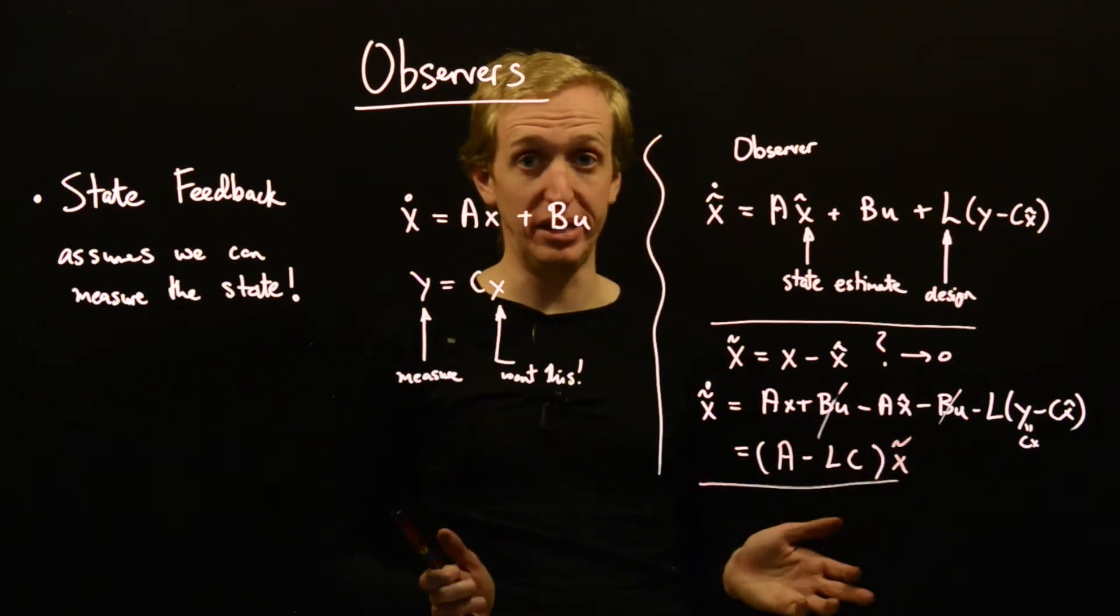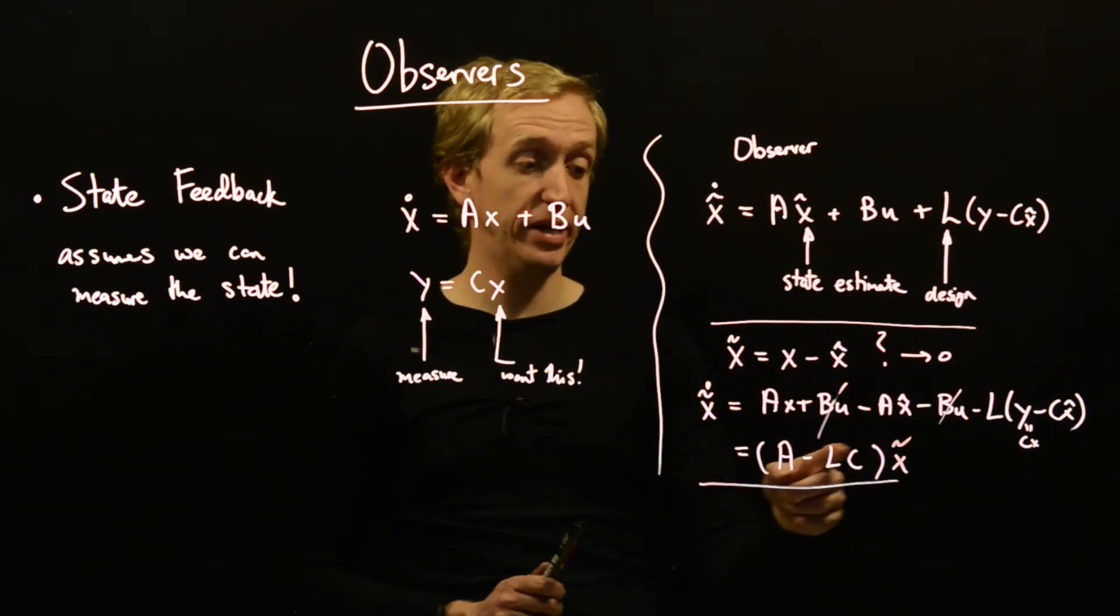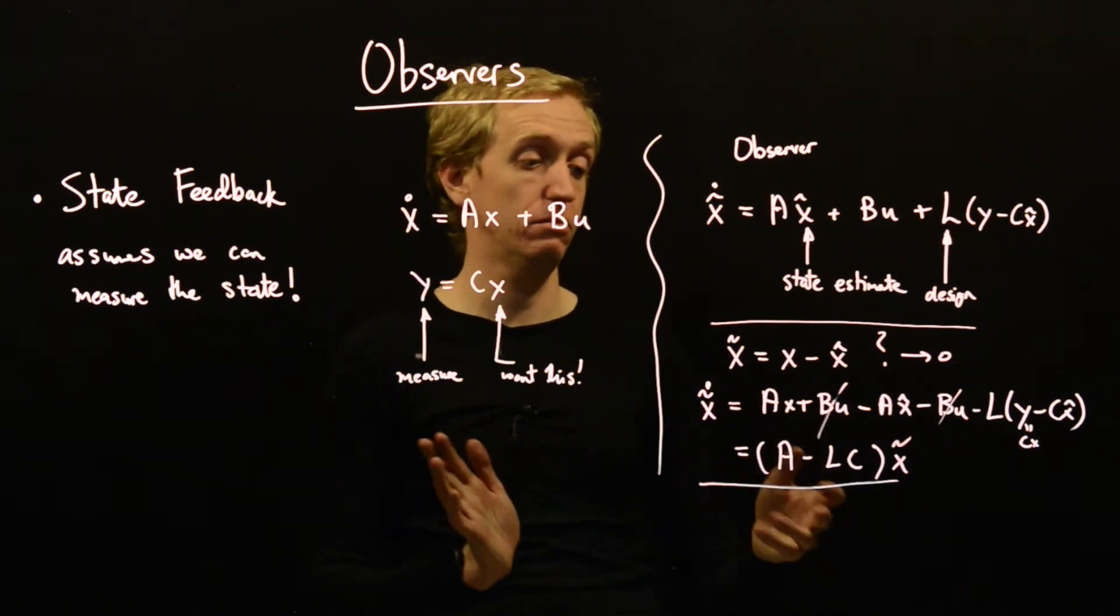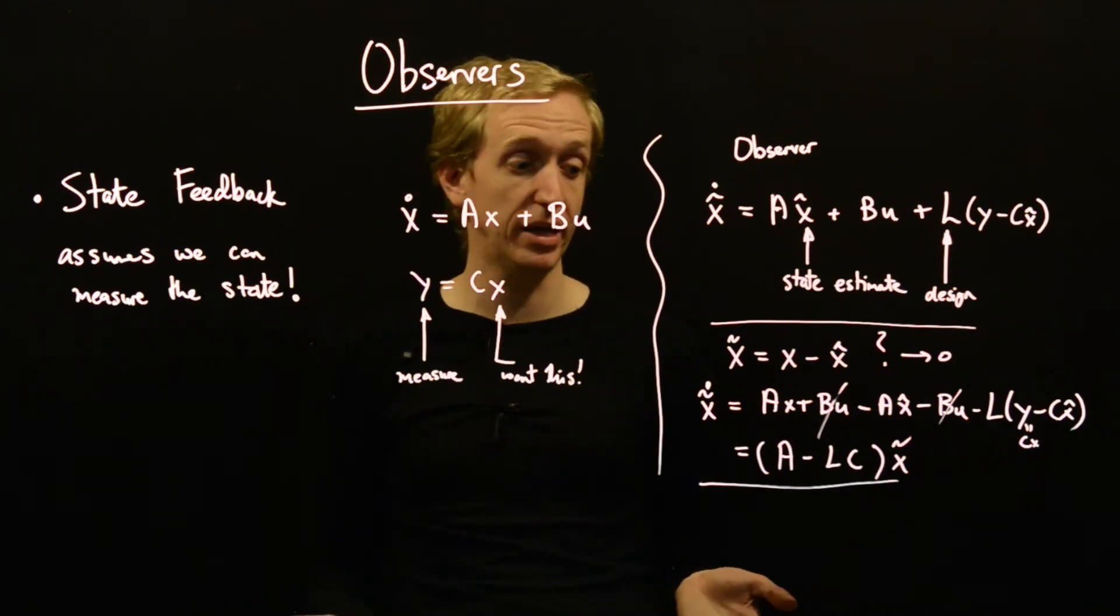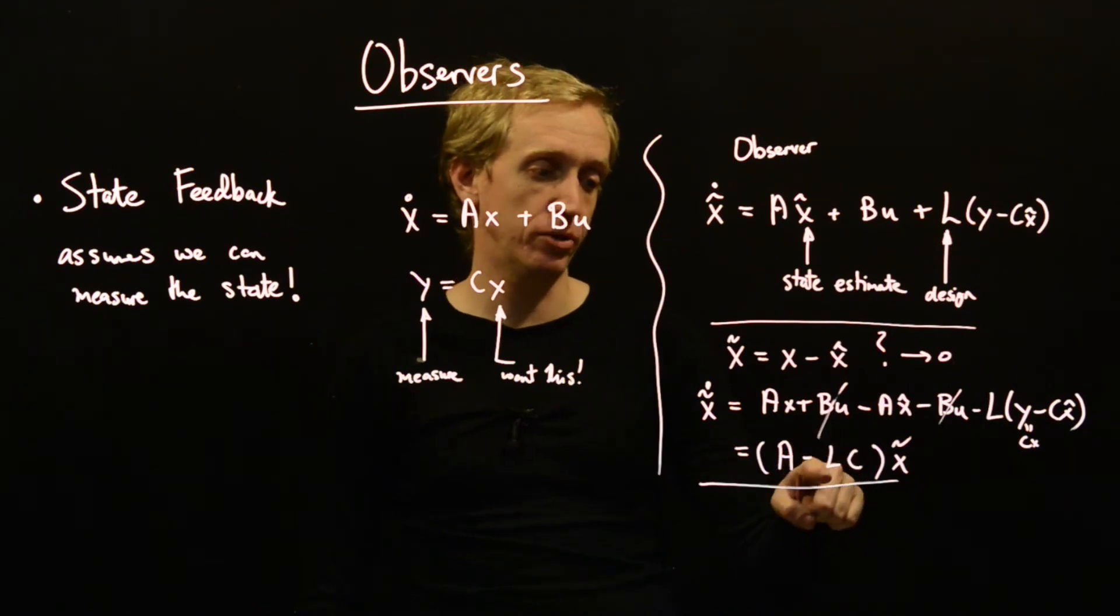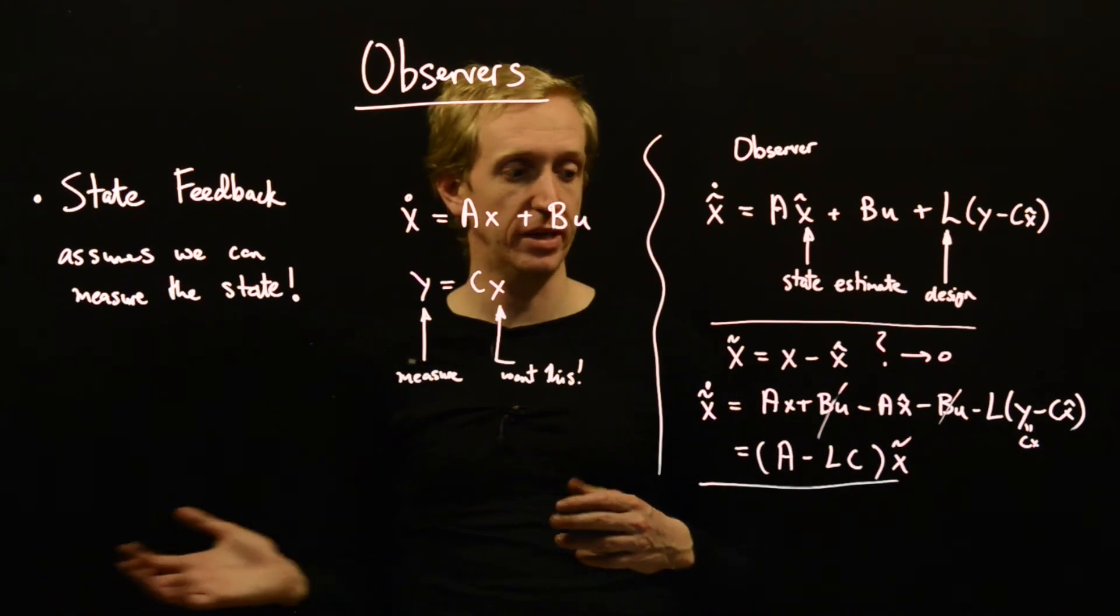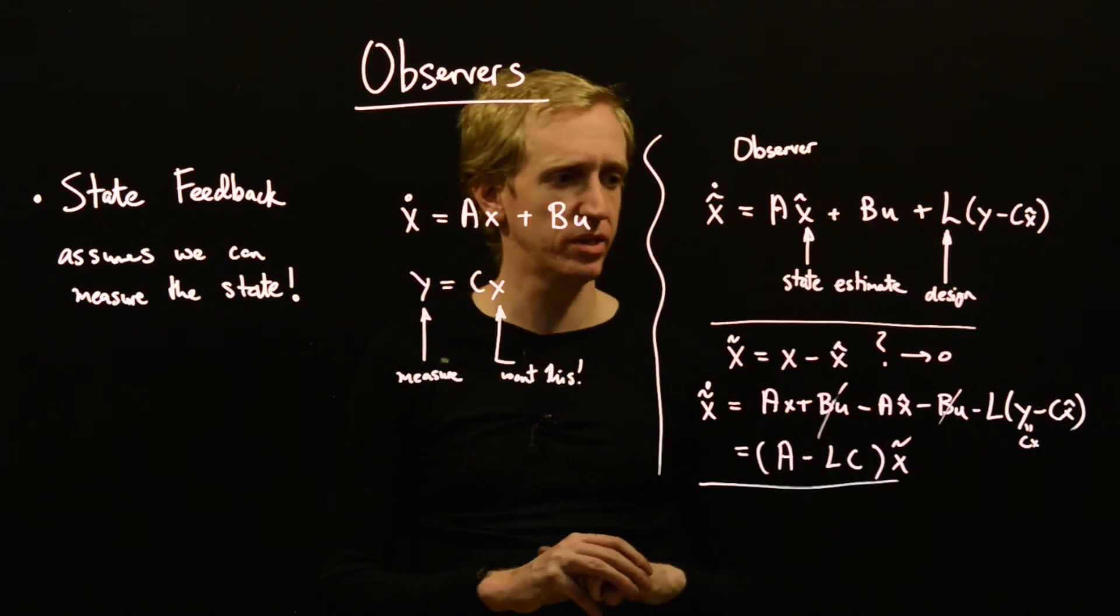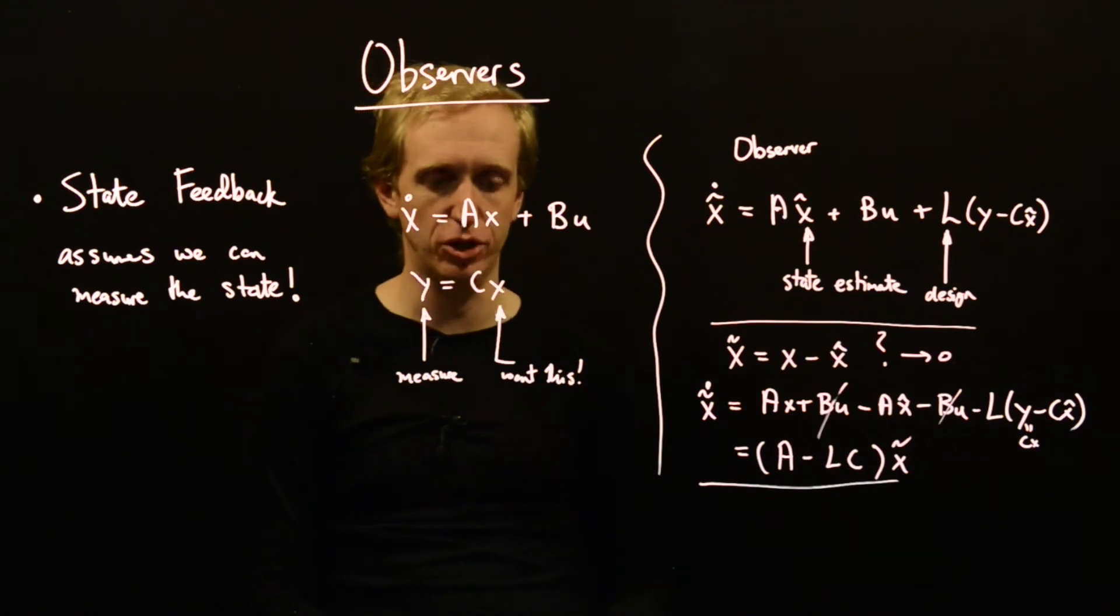So what do we need to do to make the error tend to zero? We need to make sure that the error equation is stable. And to do that, we just need the eigenvalues of A minus LC to lie in the left half plane. And so that's what we do with our observer. We design our matrix L so that the eigenvalues of this matrix here lie in the left half plane.